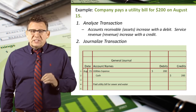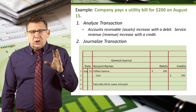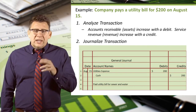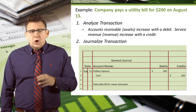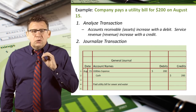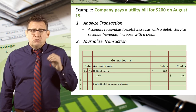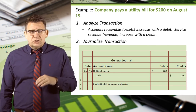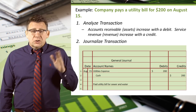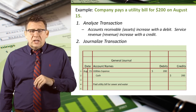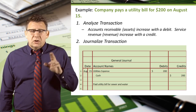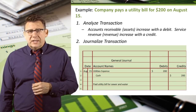I hope these brief examples have helped you understand the journalizing transaction step in the accounting cycle. One hint to remember: once you've analyzed the transaction, you don't need to re-analyze them when you journalize them. Just enter the date, the debit account and amount, the credit account and amount, and the description if the problem asks for it. No additional analysis needed.